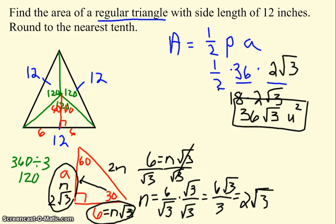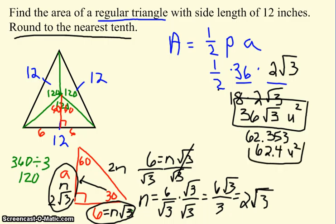This problem does say to round your answer to the nearest tenth. I personally like 36 root 3 as my answer. It's more exact, but if we are going to round, in your calculator, you'll do 36 times the square root of 3. And that rounds to, or it is 62.353, which will round up to 62.4 units squared. So technically, that would be the right answer for this problem.